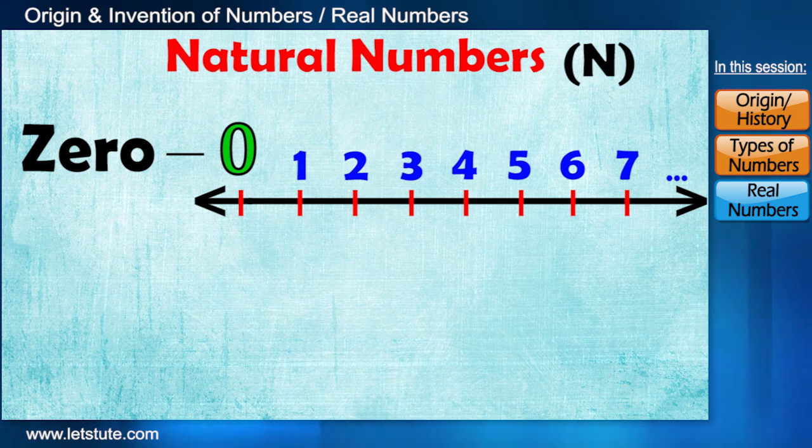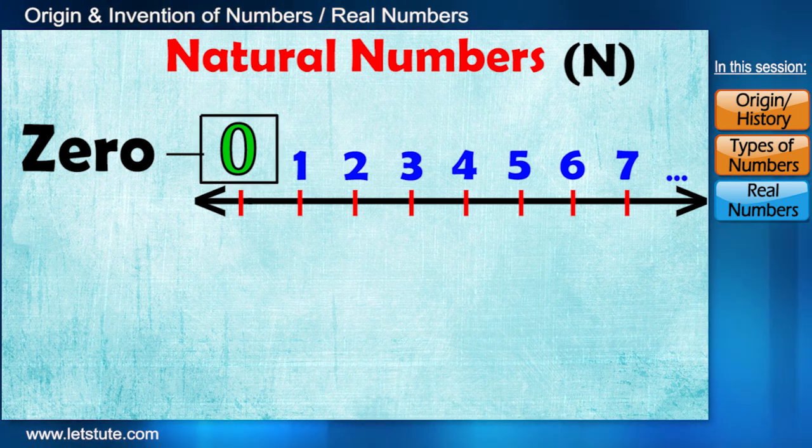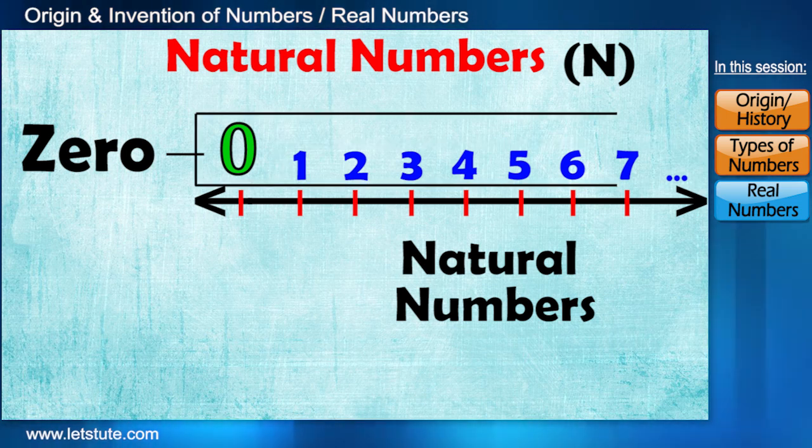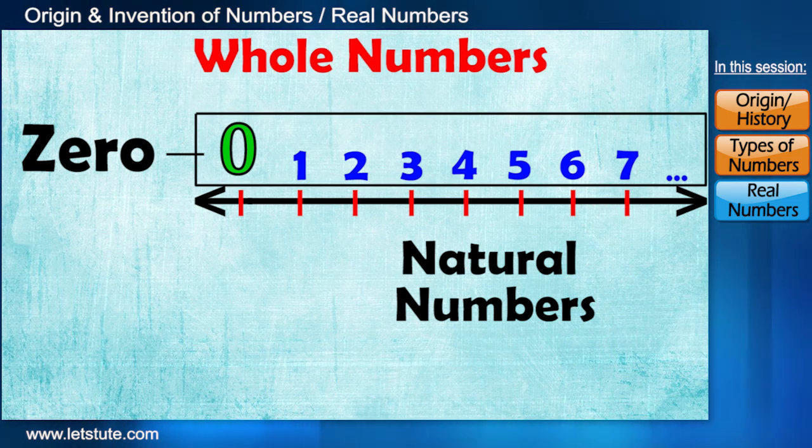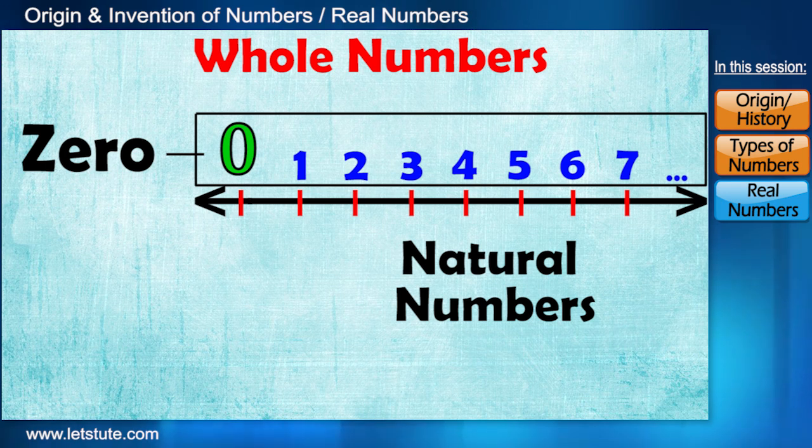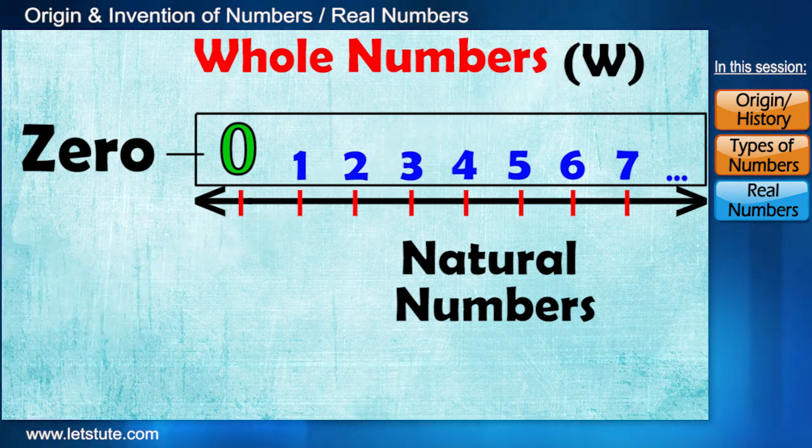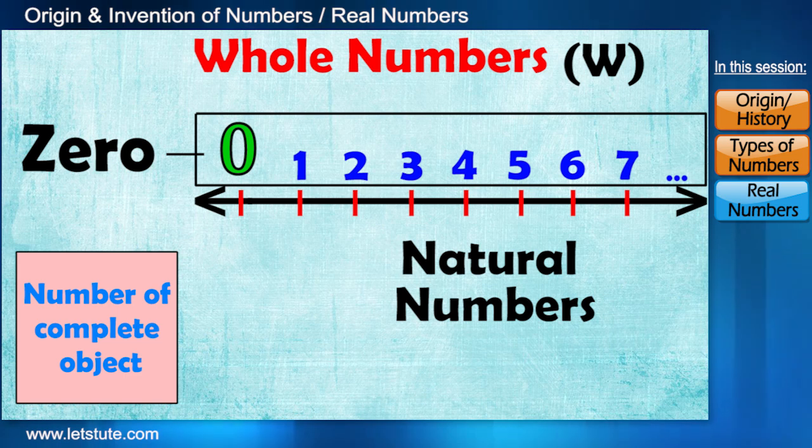Now when zero was introduced, we got a new set of numbers which includes zero and set of natural numbers. And this whole new set is again named as whole numbers, denoted by the letter W. They are called whole in the sense that it's the number of complete objects.